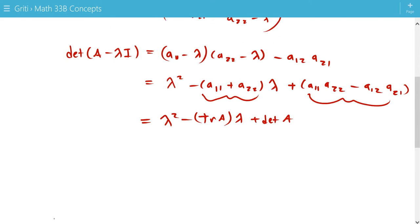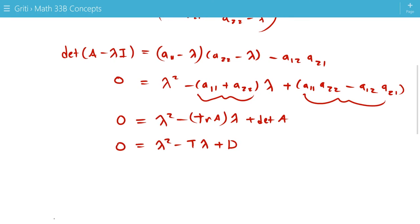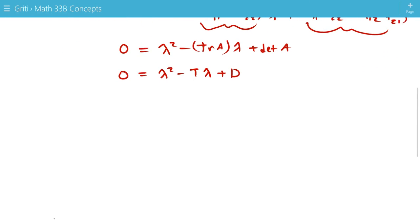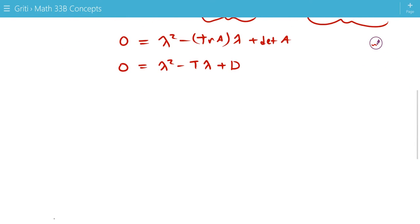And instead of writing trace A and determinant A every time, we're just going to call this capital T times lambda, and the determinant will be capital D. You want to set this equal to zero. So, this is the characteristic polynomial. And if we solve this using the quadratic equation for lambda, we get that λ = (T ± √(T² - 4D)) / 2.